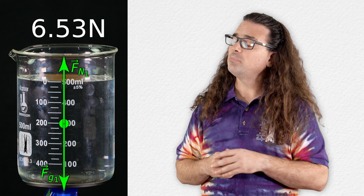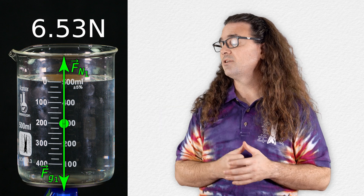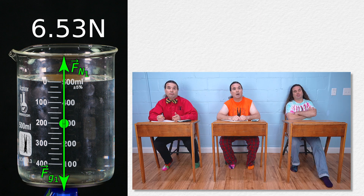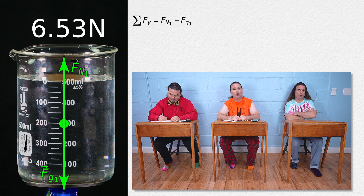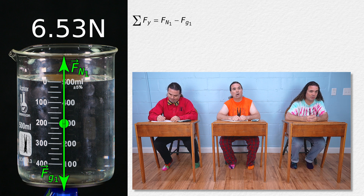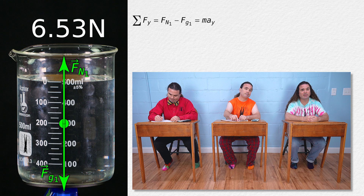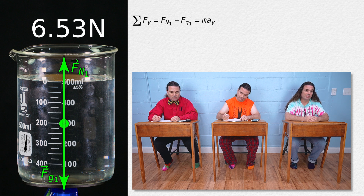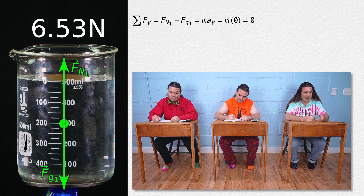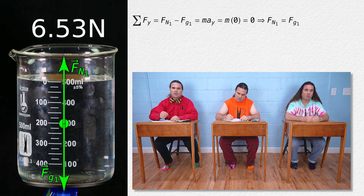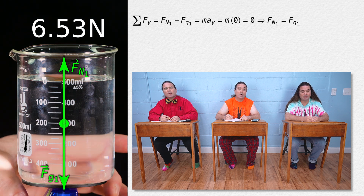Bo, please sum the forces in the y direction. The net force in the y direction equals normal force one minus weight one, which equals mass times acceleration in the y direction. The acceleration in the y direction of the system is zero because it is at rest. Therefore, normal force one and force of gravity one are equal in magnitude.